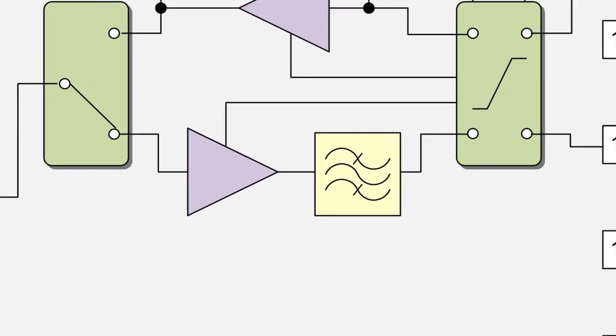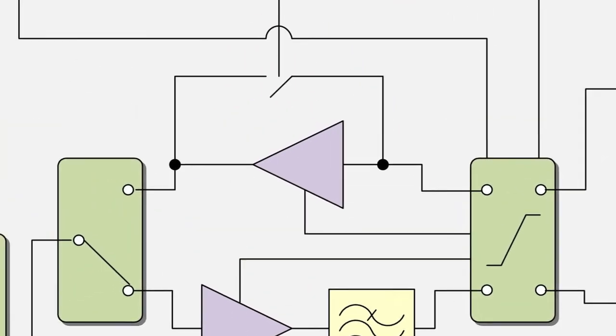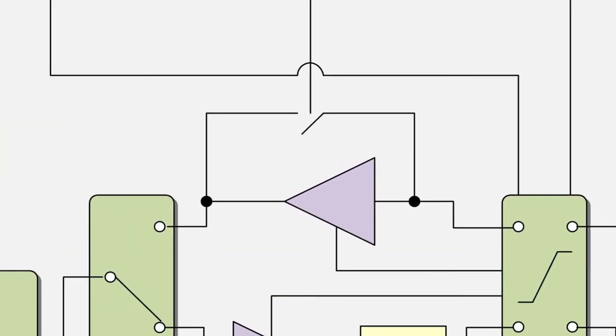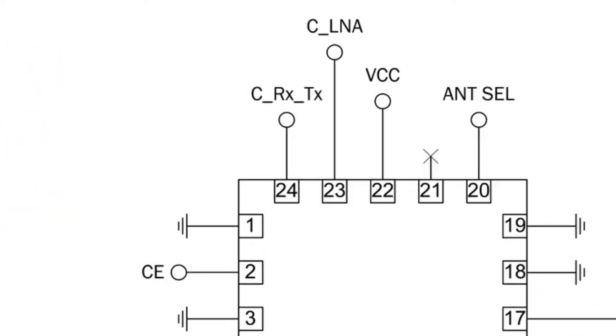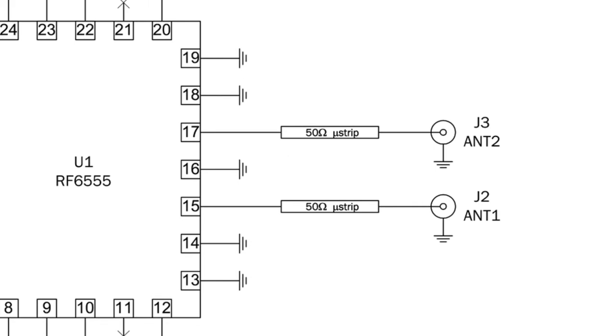This FEM integrates the PA plus harmonic filter in the transmit path and an internally integrated LNA with bypass mode. The RF 6555 provides a single balance TDD access for receive and transmit paths along with two ports on the output for connecting a diversity solution or a test port.